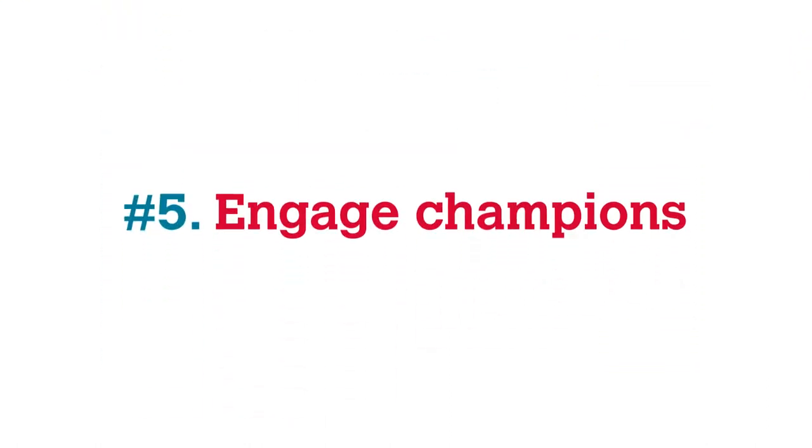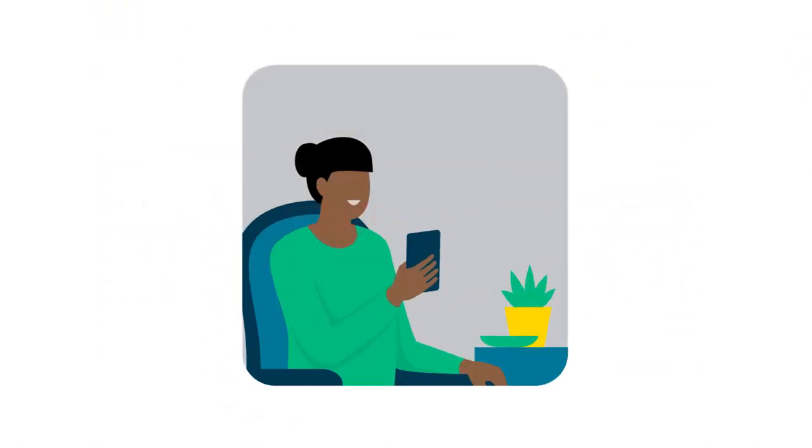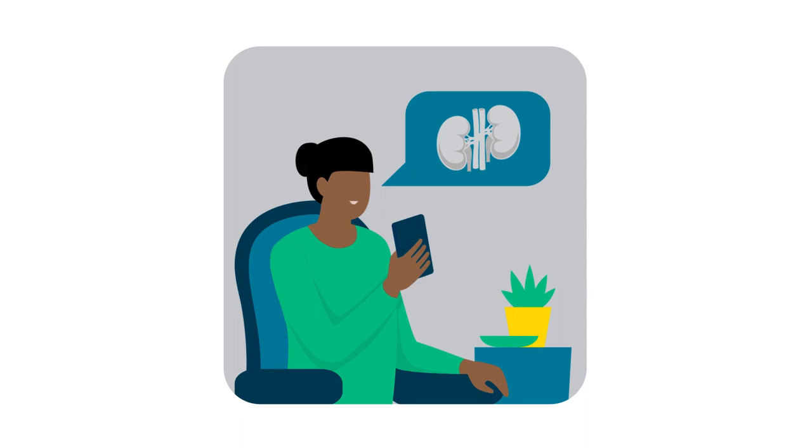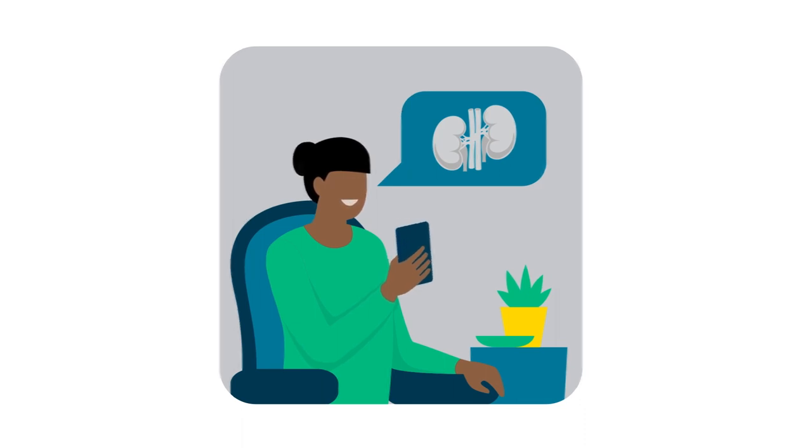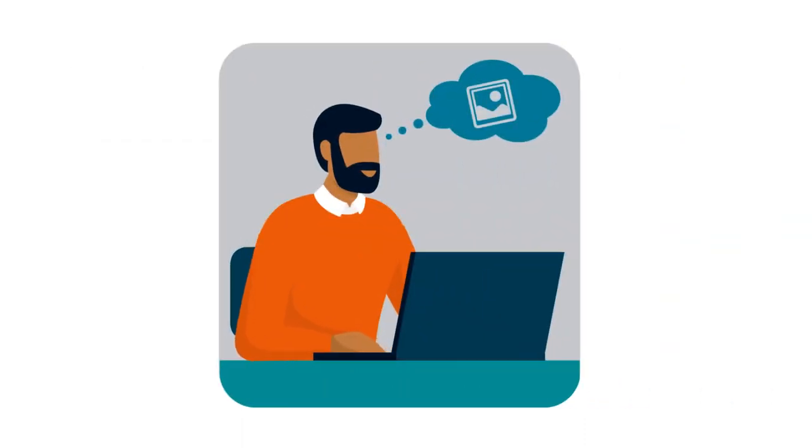Number five, engage champions. Get family and friends to be your champions so they share your story too. They can help amplify your efforts by telling neighbors, friends and even perfect strangers in the checkout line at the grocery store.